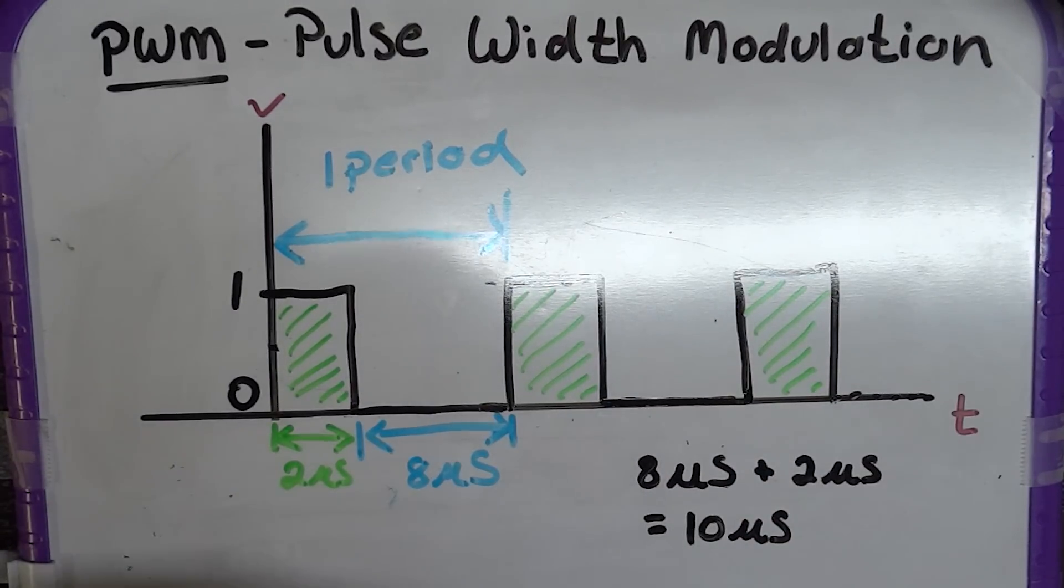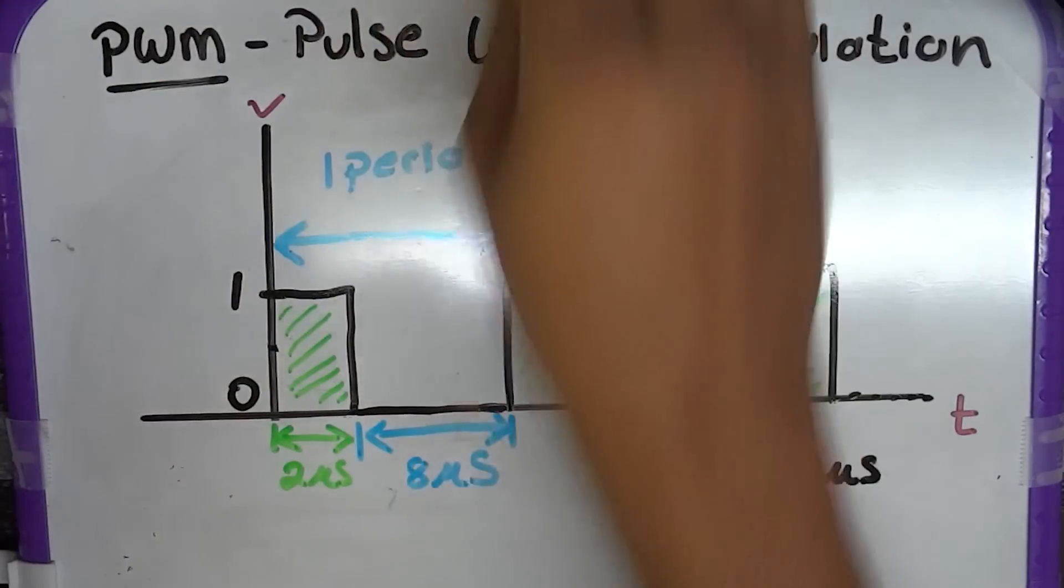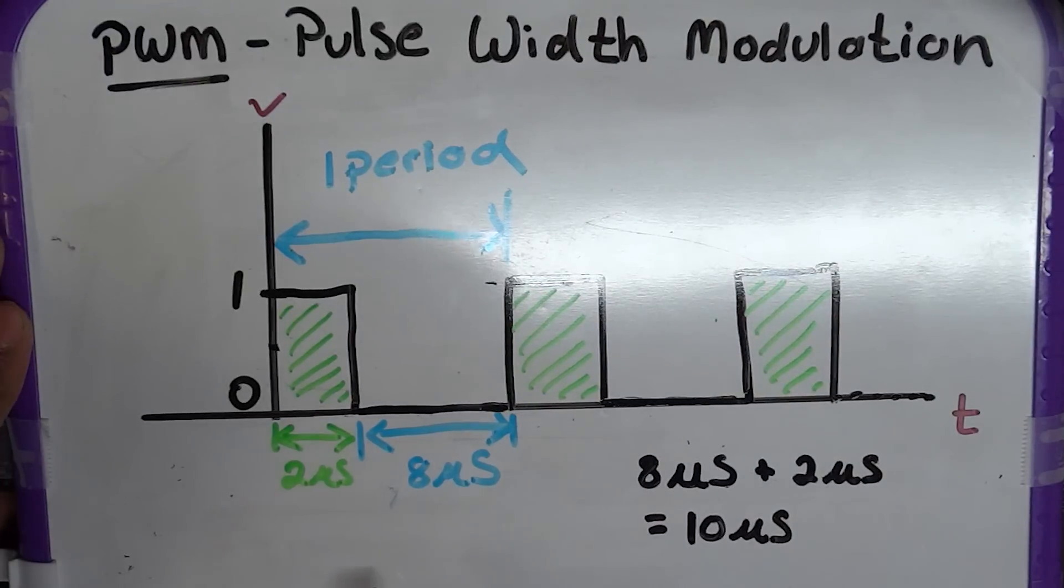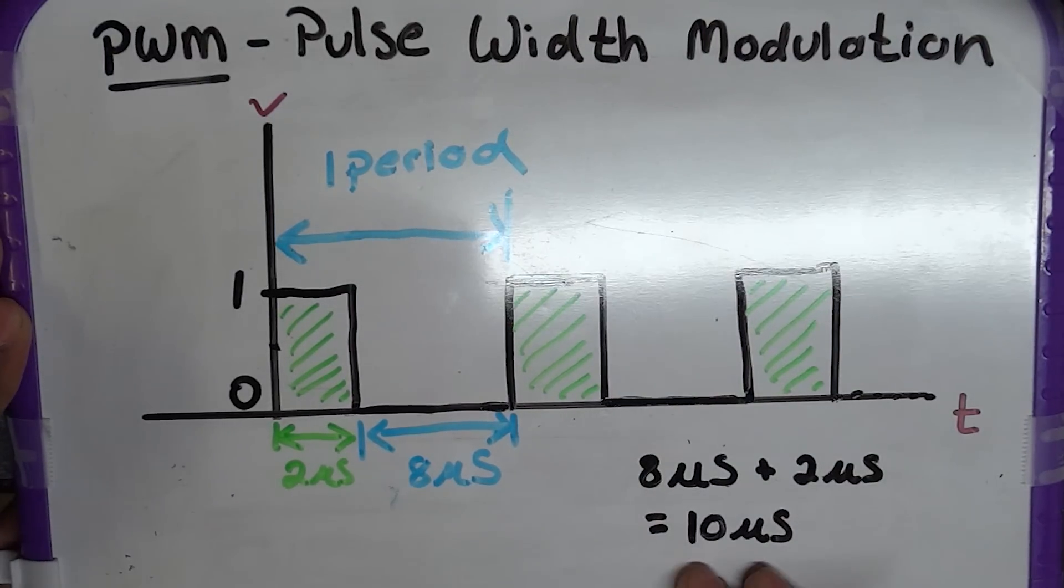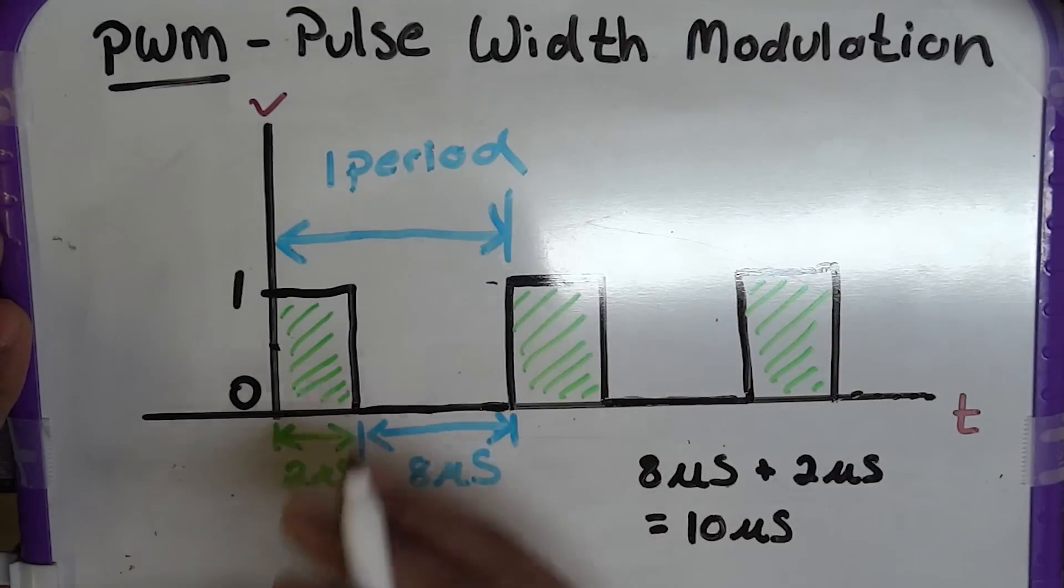Now, let's discuss the duty cycle of this signal. So, let's figure this out. The total time it's going to take is 10 microseconds. The total. So, let's start with 2 microseconds.